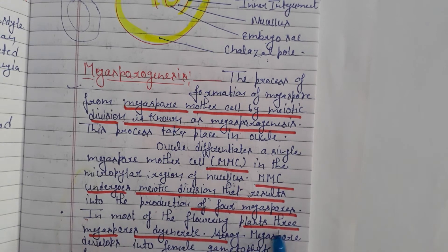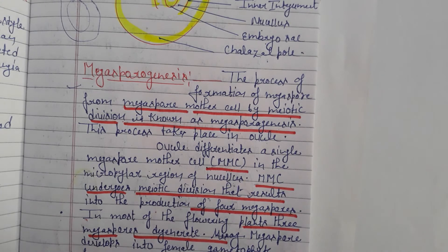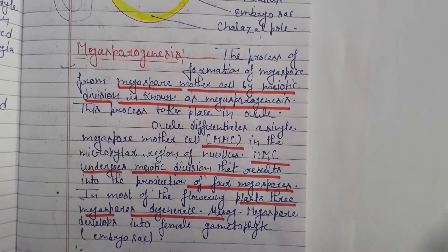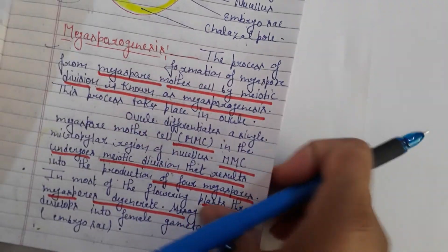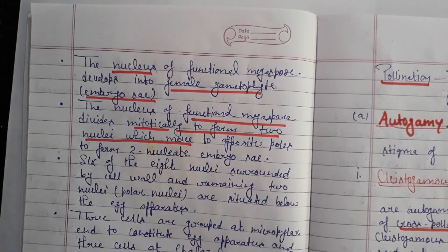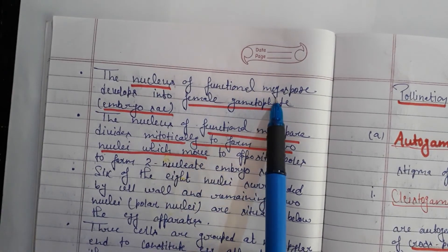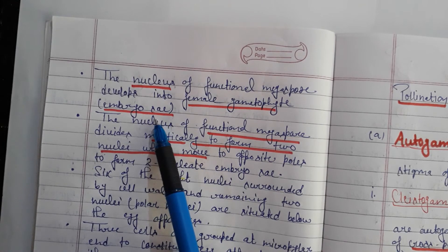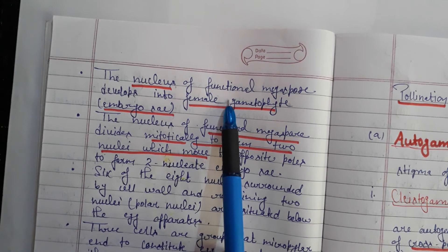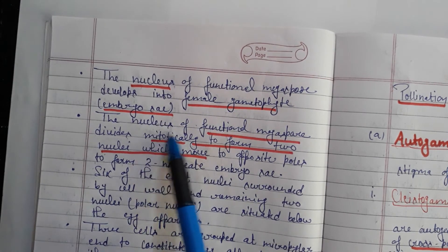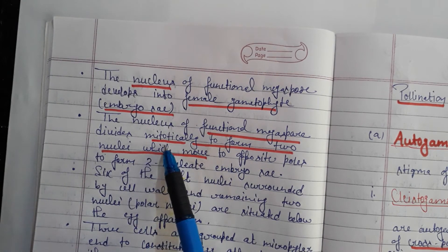In most flowering plants, 3 of the 4 megaspores degenerate, and only one — the functional megaspore — develops into the female gametophyte or embryo sac. The functional megaspore, which is haploid, then divides mitotically — an equational division — to form two nuclei, which move to opposite poles.